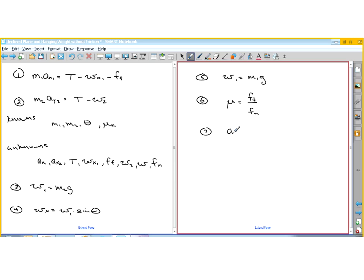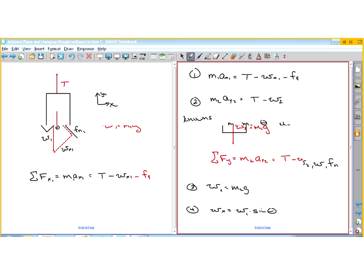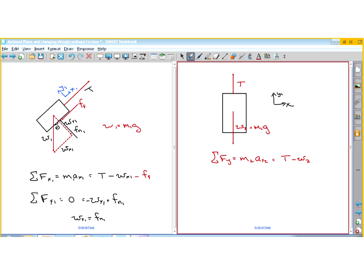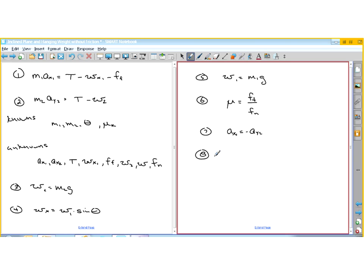So W, this is W1. W1 is equal to M1 times G. Now we have the friction equation, which says that the coefficient of friction is the ratio of these two. Oh, got another unknown here.